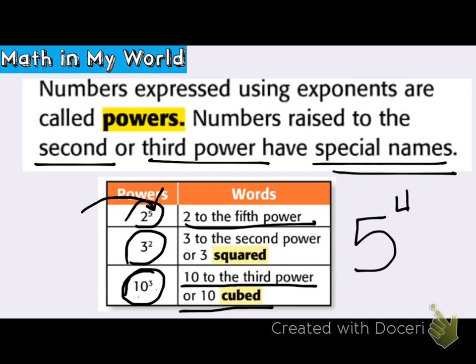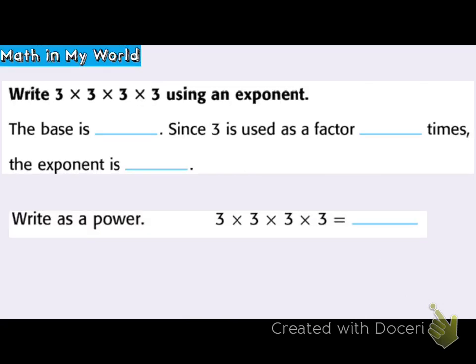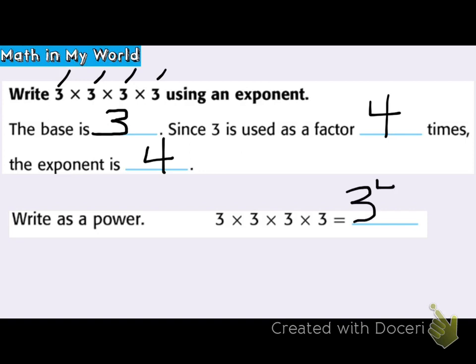So again: it has a base, like 5 is the base in '5 to the 4th power,' and 4 is the exponent. Now, math in my world: write 3 times 3 times 3 times 3 using an exponent. The base of this problem is 3. Since 3 is used as a factor 4 times — 1, 2, 3, 4 — the exponent is 4. Write it as a power: 3 to the 4th power. Again, 3 is the base, 4 is the exponent, pronounced '3 to the 4th power.'